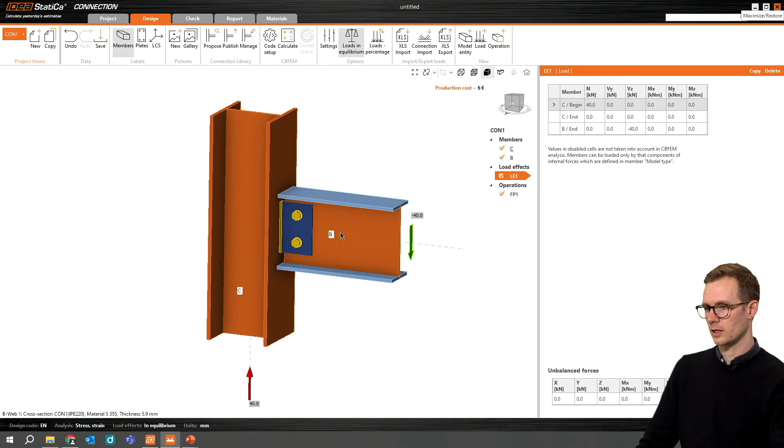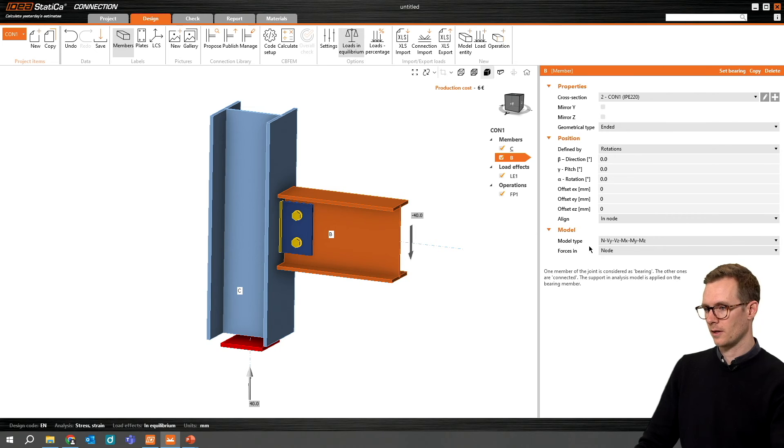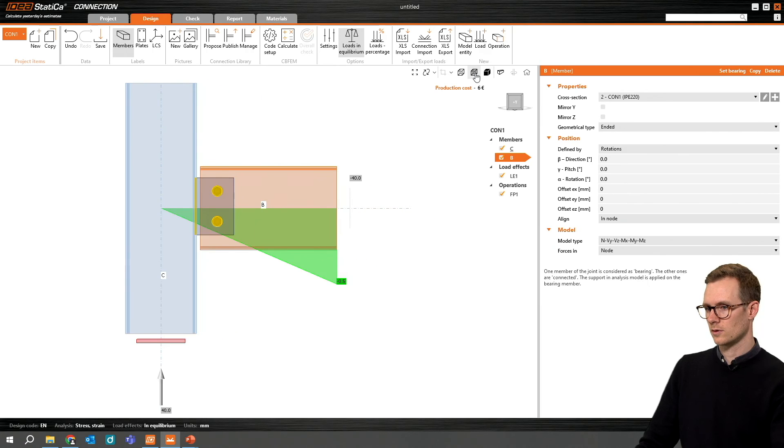In the software, it looks like this. We choose the member and go to the forces in. And by default, it's node. And if you want to see the forces, then go to the transparent or the wireframe view. And you can now see how the moment that is induced by the shear force.